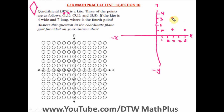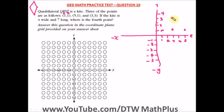It also says the kite is seven long — that's the diagonal from the top peak to the bottom point, seven units long. So from the peak at (3, 3), we need to count seven points downward. That means we'll go into negative y values: negative one, negative two, negative three, negative four, negative five.